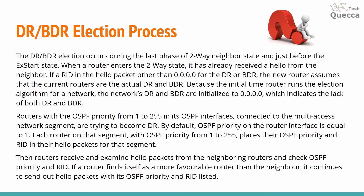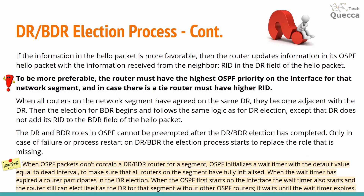Routers with an OSPF priority from 1 to 255 on their interfaces connected to a multi-access network segment are trying to become DR. By default, OSPF priority on a router interface is equal to 1. Each eligible router places its OSPF priority and router ID in its hello packets. Routers then receive and examine hello packets from neighbors, checking OSPF priority and router ID. If a router finds itself more favorable than the neighbor, it continues sending hello packets with its own priority and router ID.